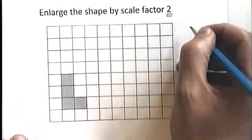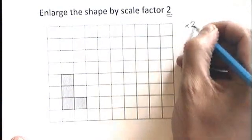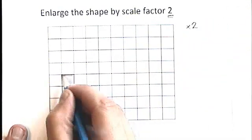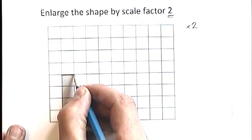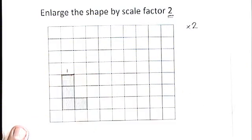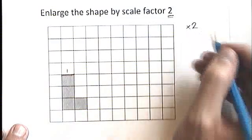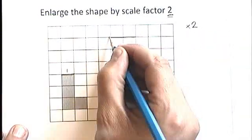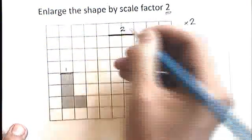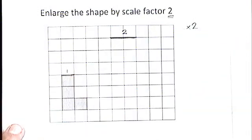So our scale factor is 2. That means I need to multiply every side length by 2. And if I look here, this one here, assuming this is a centimeter squared grid, this is 1 centimeter. So in my enlargement, that needs to be doubled. 1 times 2 is 2. So I'm now going to draw the top of my new shape there, and its width is going to be 2.